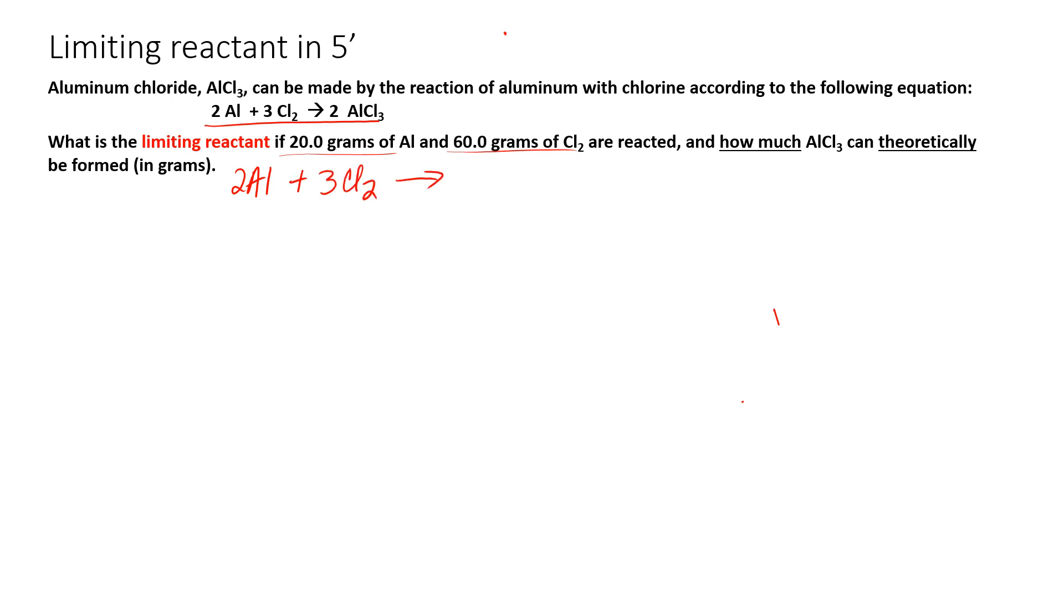I'm going to note that I have 20.0 grams of aluminum, 60.0 grams of Cl2. And I want to know not only the limiting reagent, but how much of this product could I potentially form?